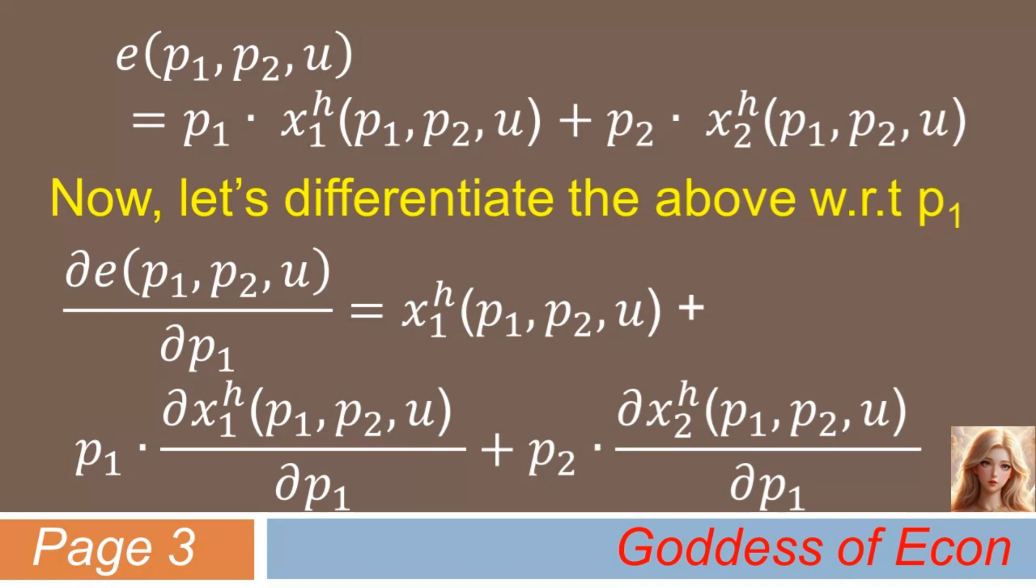It may look a bit complicated, but in fact, we only have a total of just three terms here. So, if you differentiate the expenditure function with respect to p1, you get three terms on the right-hand side.